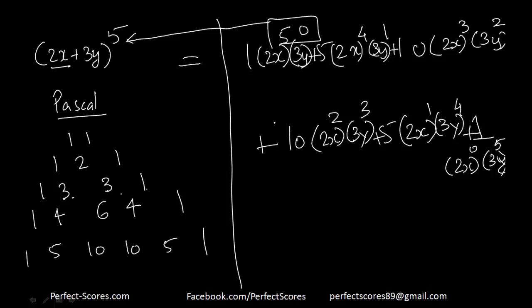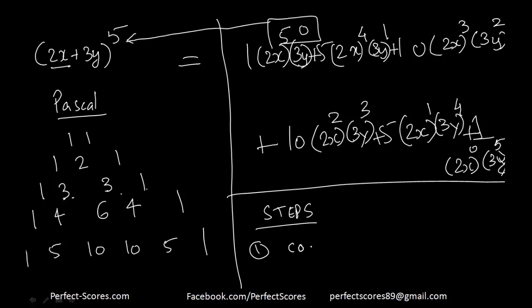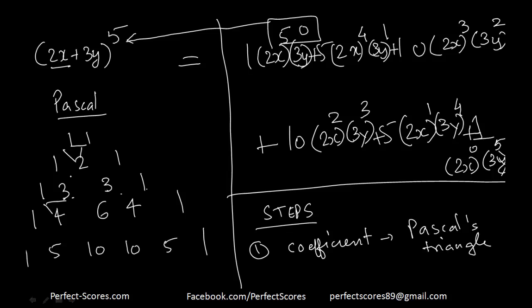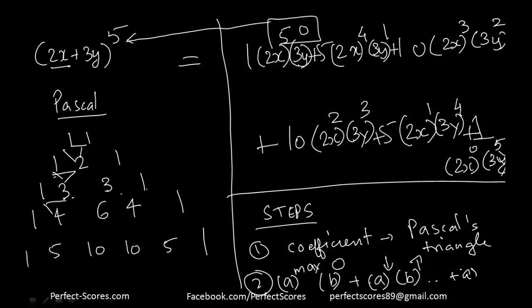To summarize the steps: first, write down the coefficients using Pascal's triangle — you don't need to memorize it since it's easily derivable starting from 11, then 121, then 1331, adding adjacent terms each time. Second, for the first term start from the maximum possible value, and for the second term start from 0, then gradually decrease the first power by 1 and increase the second by 1 until the first reaches 0 and the second reaches the maximum. Now let's generalize our findings.